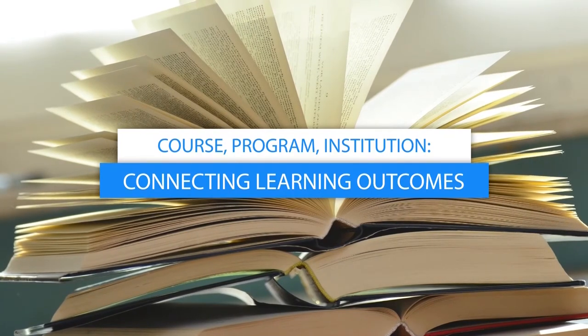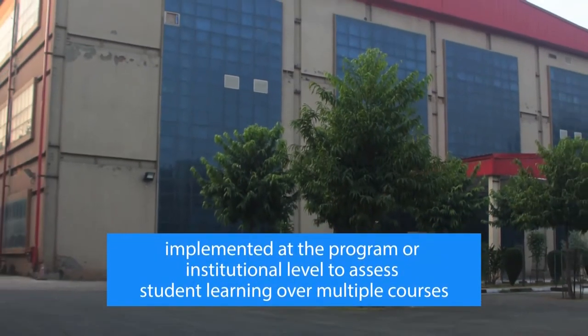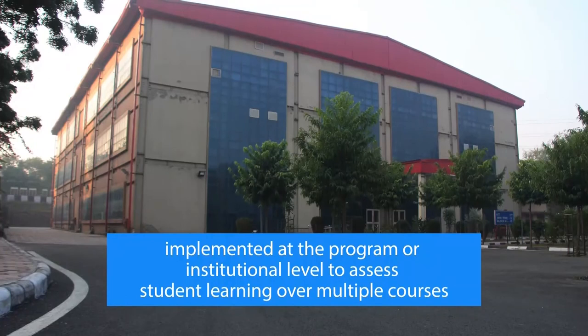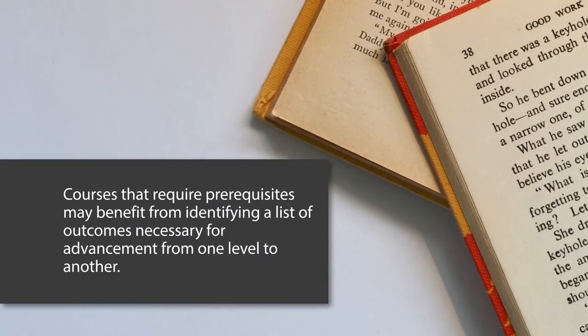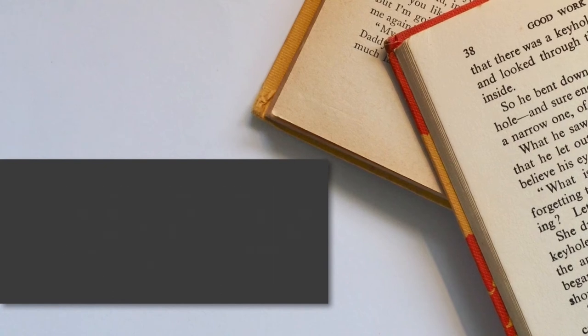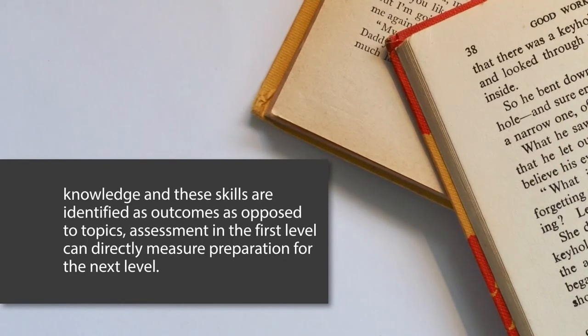We will now understand the connection of course, program, and institution with the framing of learning outcomes. Learning outcomes can also be implemented at the program or institutional level to assess student learning over multiple courses and to monitor whether students have acquired the necessary knowledge and skills at one stage to be able to move on to the next series of courses. Courses that require prerequisites may benefit from identifying a list of outcomes necessary for advancement from one level to another.